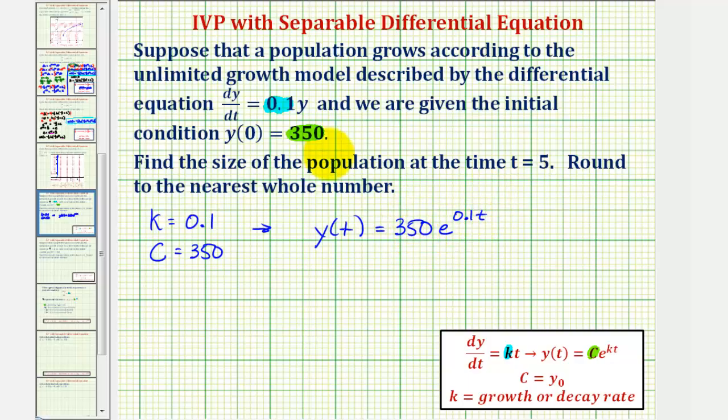So again, 350 is the initial value, or starting population. And because k is equal to 0.1, the exponential growth rate per unit of time is 10%.